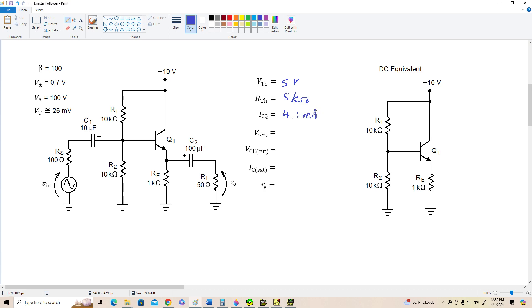Alright, VCEQ is VCC minus IC times RE, so that will be 10 minus 4.1 volts, which is 5.9 volts. VCE cutoff, 10 volts.